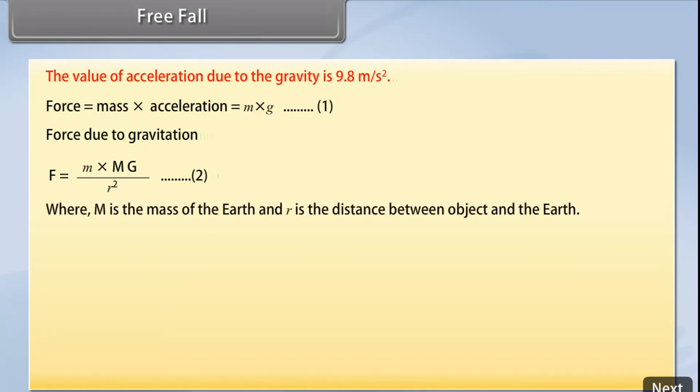Where M is the mass of the earth and r is the distance between object and the earth. From equations 1 and 2, m into g equals m into M G upon R square. G equals G M upon R square. The value of g is 9.8 meters per second squared.